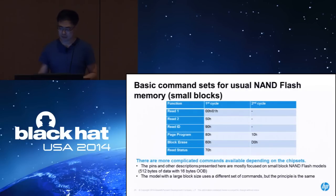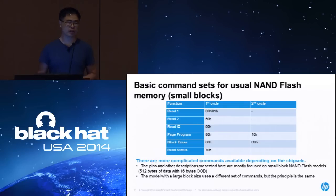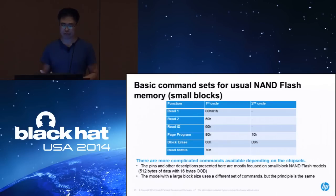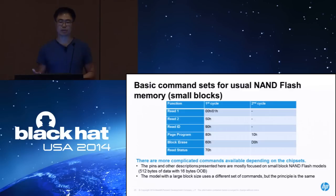These are the basic commands from the NAND flash side. They can differ between brands, but these basic commands are very common. For example, there are three different read operation commands. For reading the ID, the command is 0x90. Page program is for writing data to NAND flash. Block erase lets you erase a whole block, and so on. According to your own NAND flash brand, they may support some additional special modes.